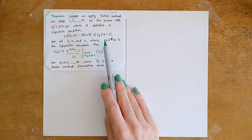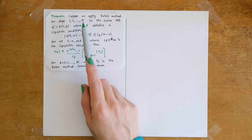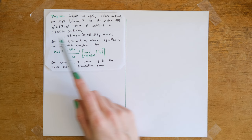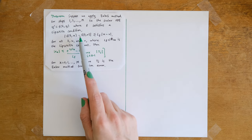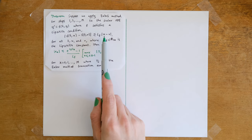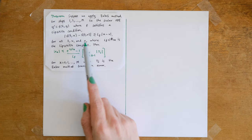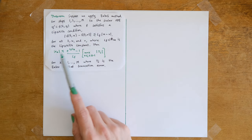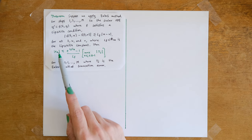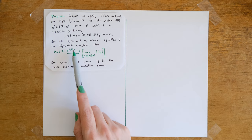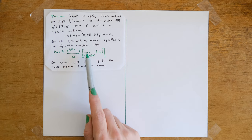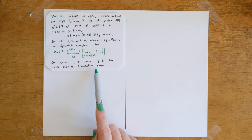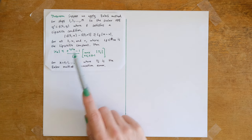We'll look at taking steps 1 to M of the Euler method applied to the scalar ODE y′ = f(t, y), where f satisfies a Lipschitz condition: the magnitude of f(t, u) minus f(t, v) is less than or equal to L_f times the magnitude of u minus v for all valid t, u, and v, where L_f is a real positive constant — the Lipschitz constant. Then the magnitude of global error |e_k| is less than or equal to e^{L_f t_k} minus 1 divided by L_f times the maximum from 0 to k minus 1 of |T_j|.